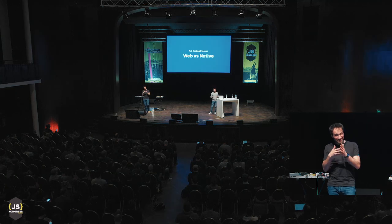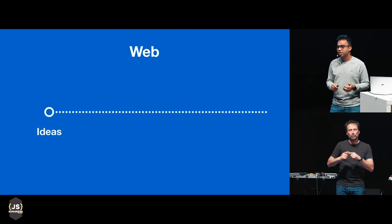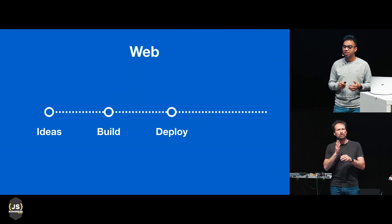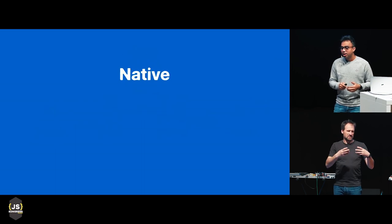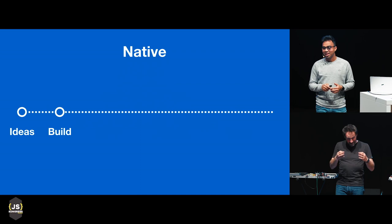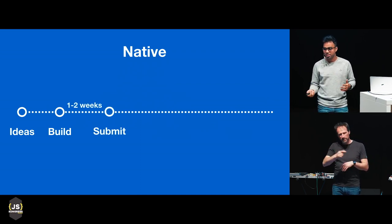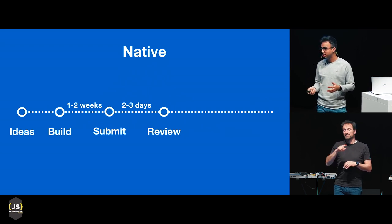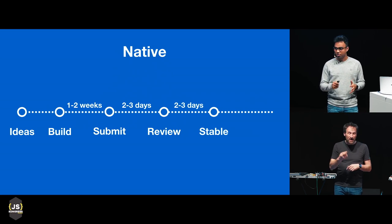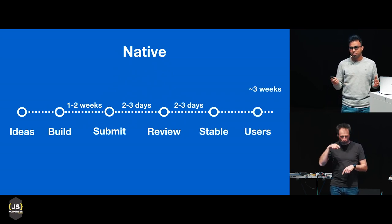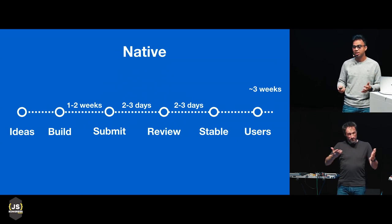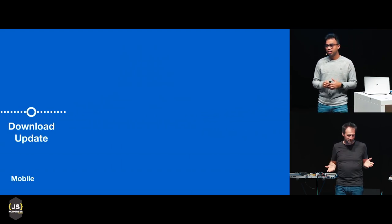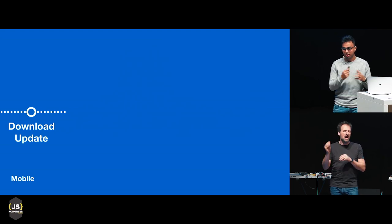The process of A/B testing is done very differently in web versus mobile. In web, you can start with an idea in the morning, build it, implement it, deploy in the afternoon, and have users seeing it by end of day. In mobile it's very different — you build it, but it takes one to two weeks based on your app release cycle to submit to the app store. Then two to three days for review, then two to three days to stabilize. So it could take approximately three weeks, by which time your hypothesis could be invalid or there could be a bug in your experiment.